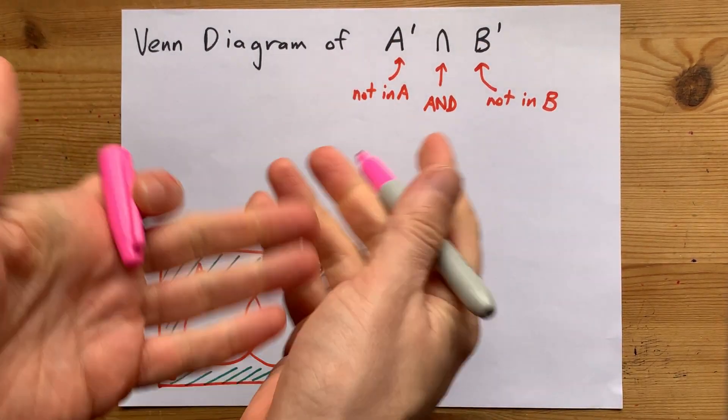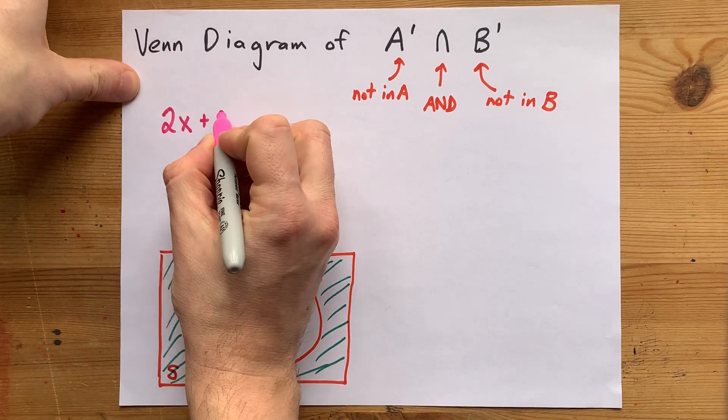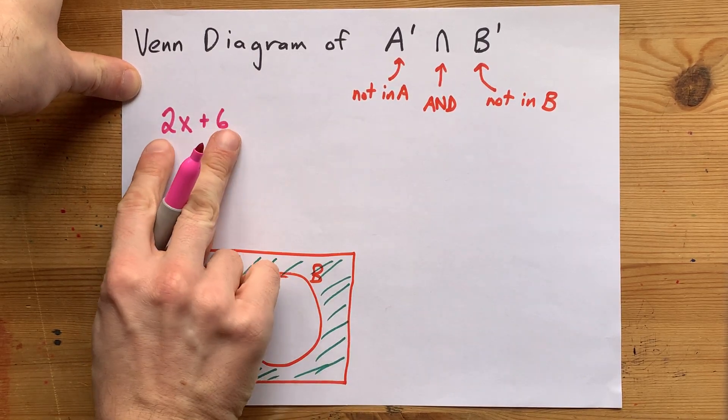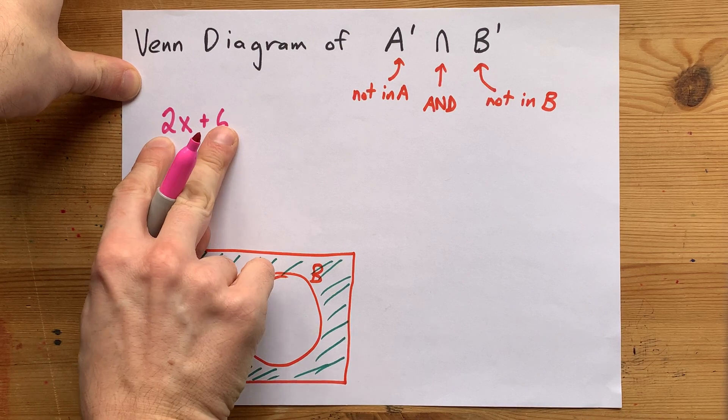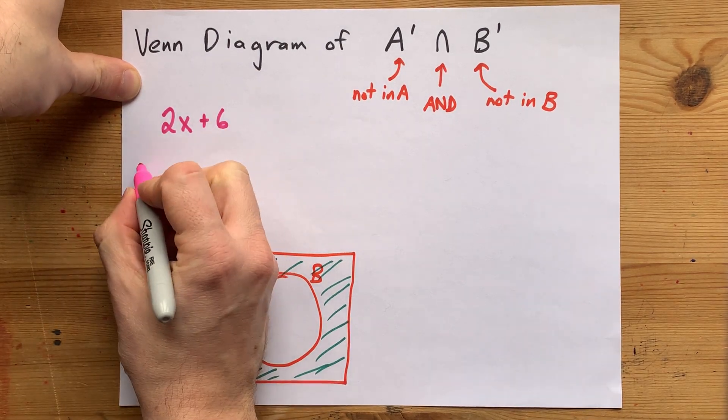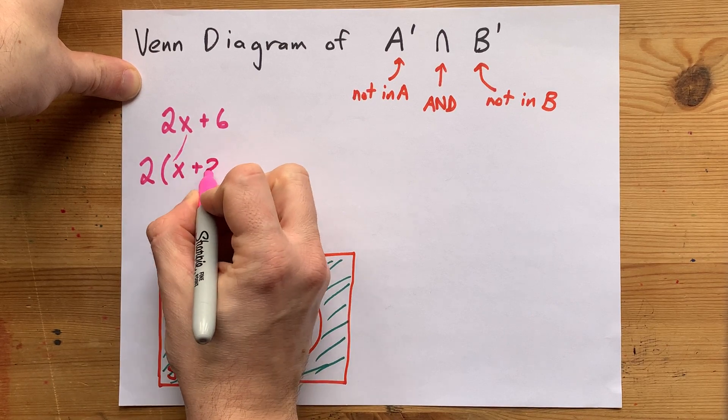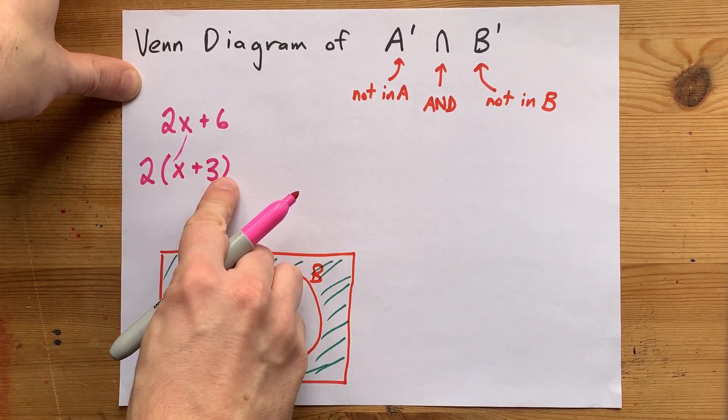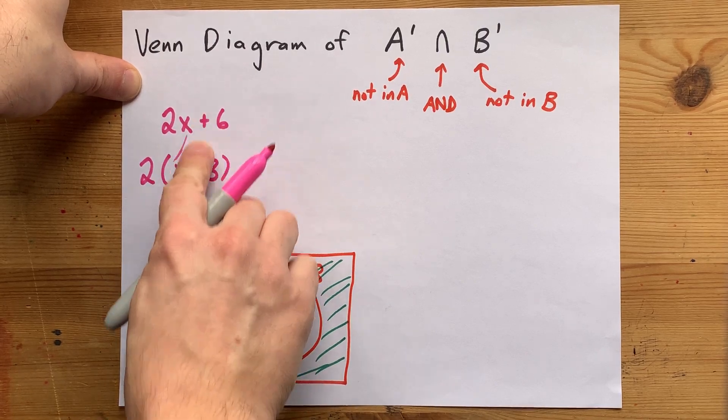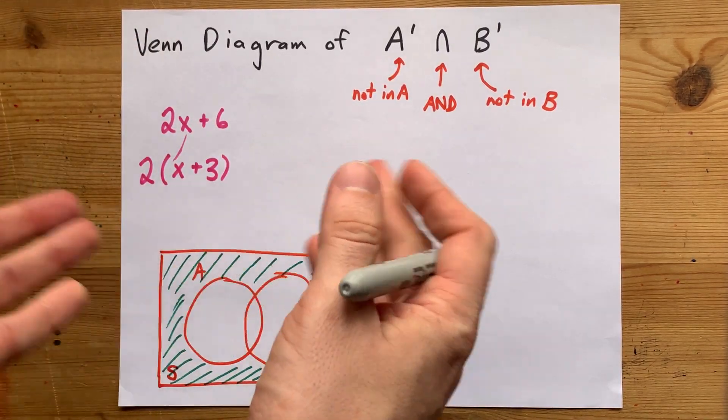If you remember factoring like 2x plus 6, if both of these are divisible by 2, you were allowed to pull the 2 out and then divide each of these by 2 separately. 2 times x plus 3 is the factored form of 2x plus 6, but they're equivalent expressions. They mean the same thing.